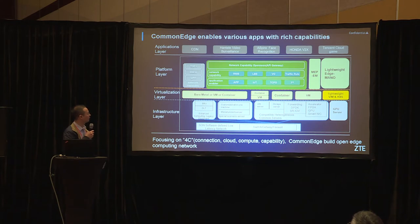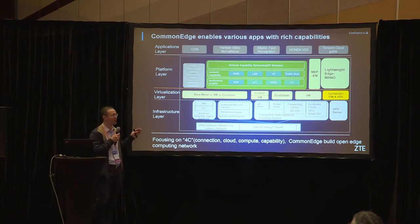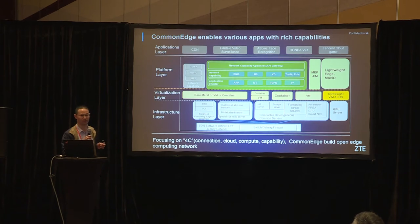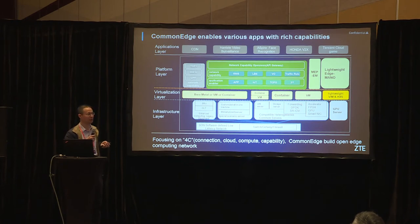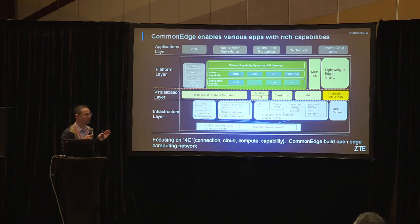On top of the virtualization layer, we have the platform layer. This layer provides different capabilities. On the left part, we have TEF gateway and UPF, which provide local traffic breakout functionality to reduce network latency. On the right part, we have the network capability platform, which provides both telecom capabilities and IT capabilities.